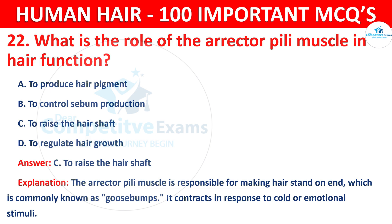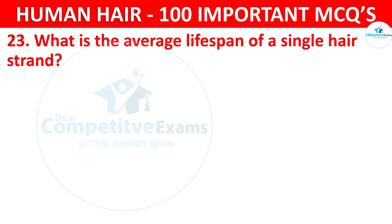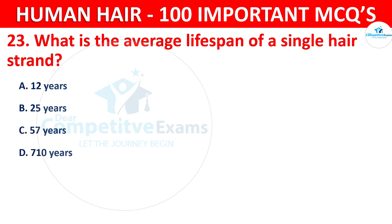Question number 23. What is the average lifespan of a single hair strand? The options are 1–2 years, 2–5 years, 5–7 years, or 7–10 years.